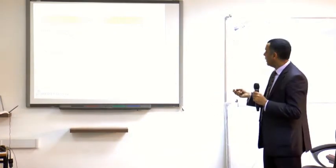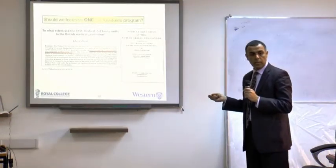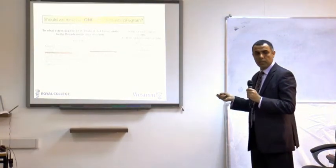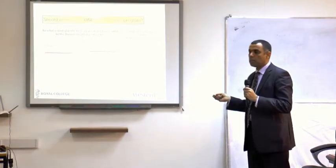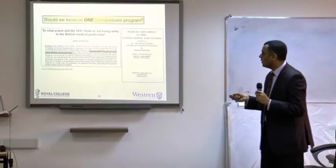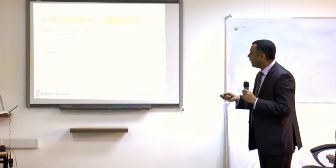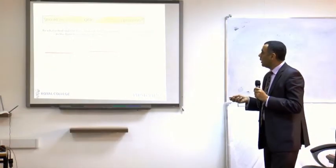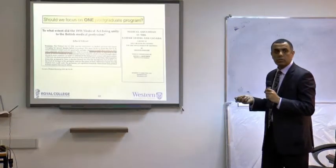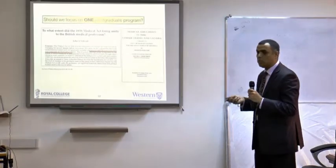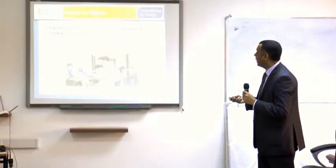Abraham Flexner, whom I mentioned in my first slides, was asked in 1910 to evaluate 168 medical schools in the United States and Canada. After evaluation, he ended up closing 50% of them — a huge number. They focused on quality, not numbers. Same thing in 1858 after the GMC was established: when they went through the requirements for medical schools, many did not meet the criteria and were closed. We shouldn't rush into producing more graduates without paying attention to quality.